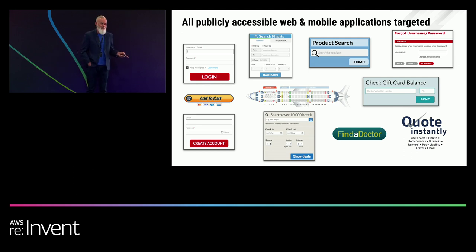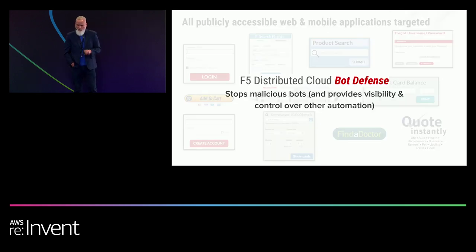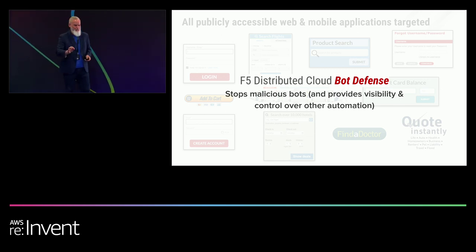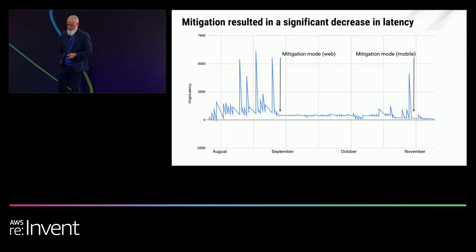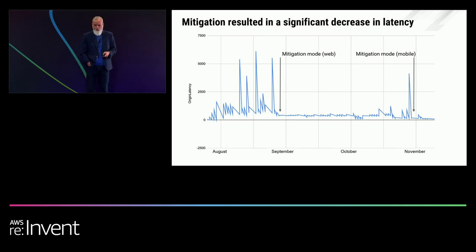Virtually all public-facing applications are targeted — not just employee or consumer login, but vendor login, partner login, supplier login. Anything that is public-facing, attackers will launch automation if there's a perceived incentive. We call this bot defense — any time you need to stop malicious bots and gain visibility and control over all the other automation, bot defense is what you'll want. After the noise is removed, a common question is what about latency? You do have to introduce some latency to execute JavaScript, but we typically see a net improvement in performance because we get rid of all the unwanted automation. The large spikes in latency were due to attacks — once we went into mitigation mode, latency improved significantly.